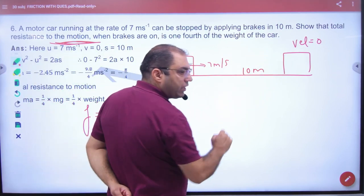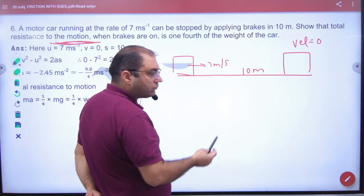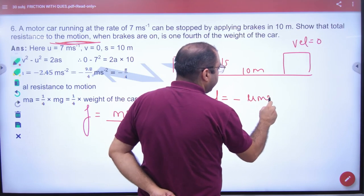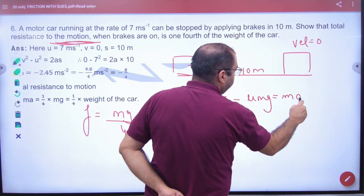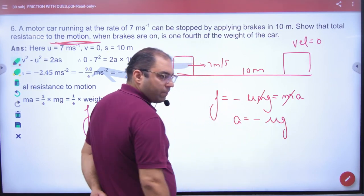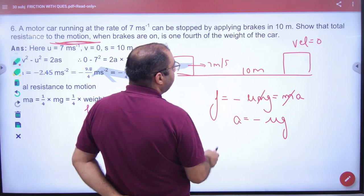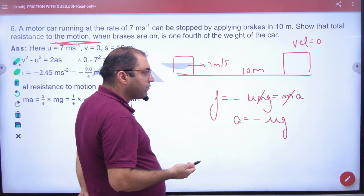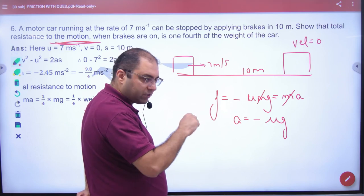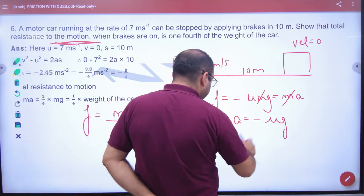Since velocity is slowing down, there is retardation. Force of friction produces retardation. F = ma becomes F/m = a. You need to find the value of the retarding force. The force of friction will be F = ma.